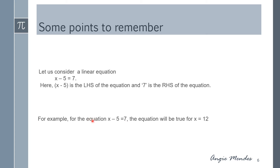Let's look at x minus 5 is equal to 7. To find the value of x, we take 5 on the other side and get x is equal to 12. So x equals 12 is the solution.